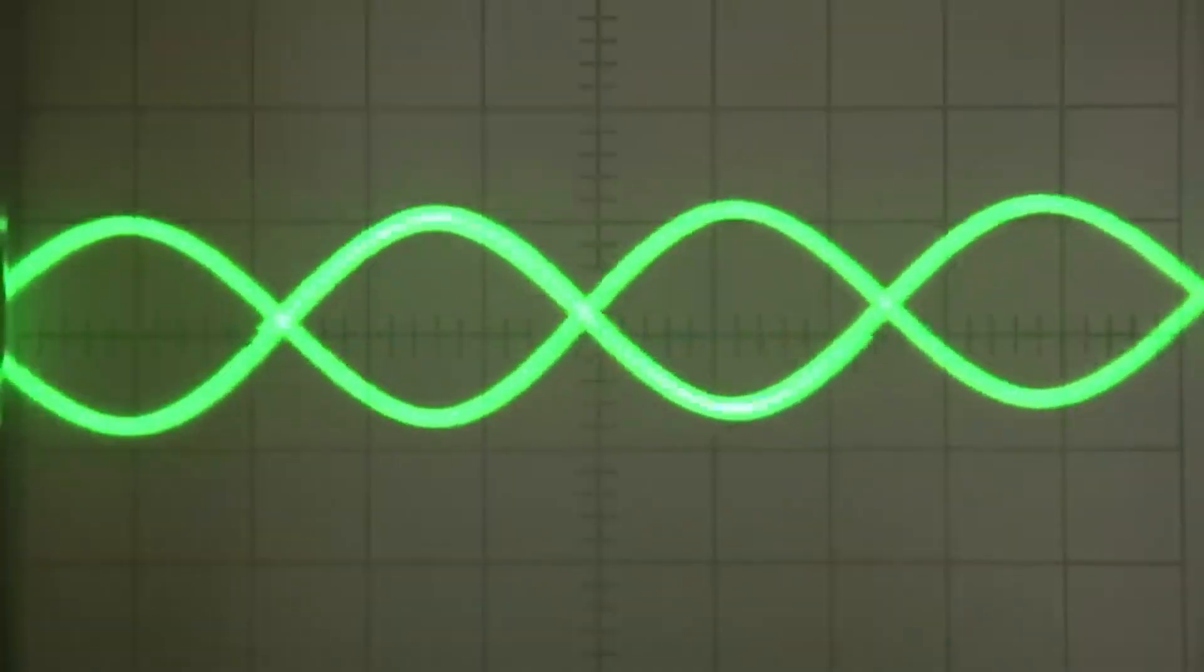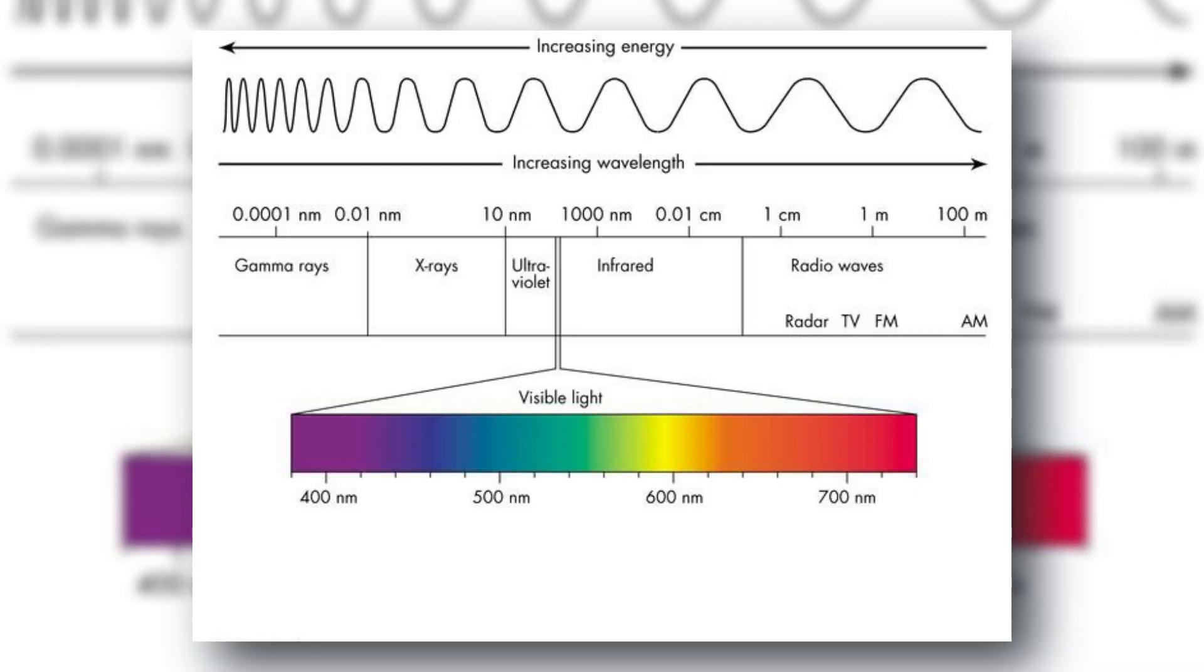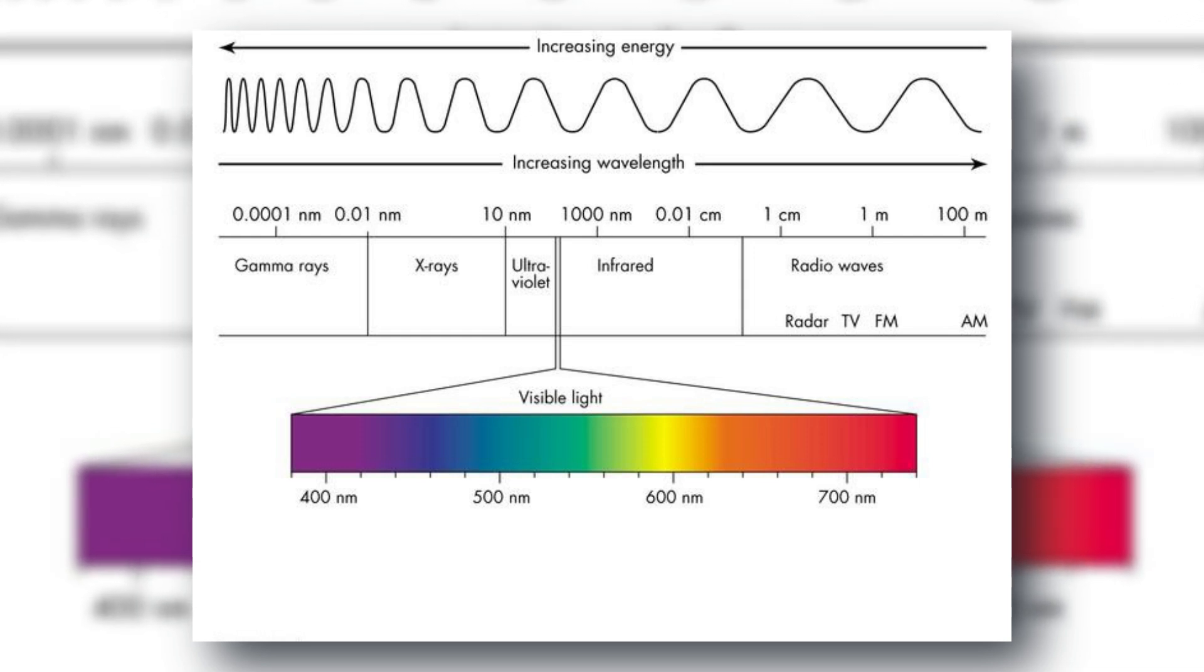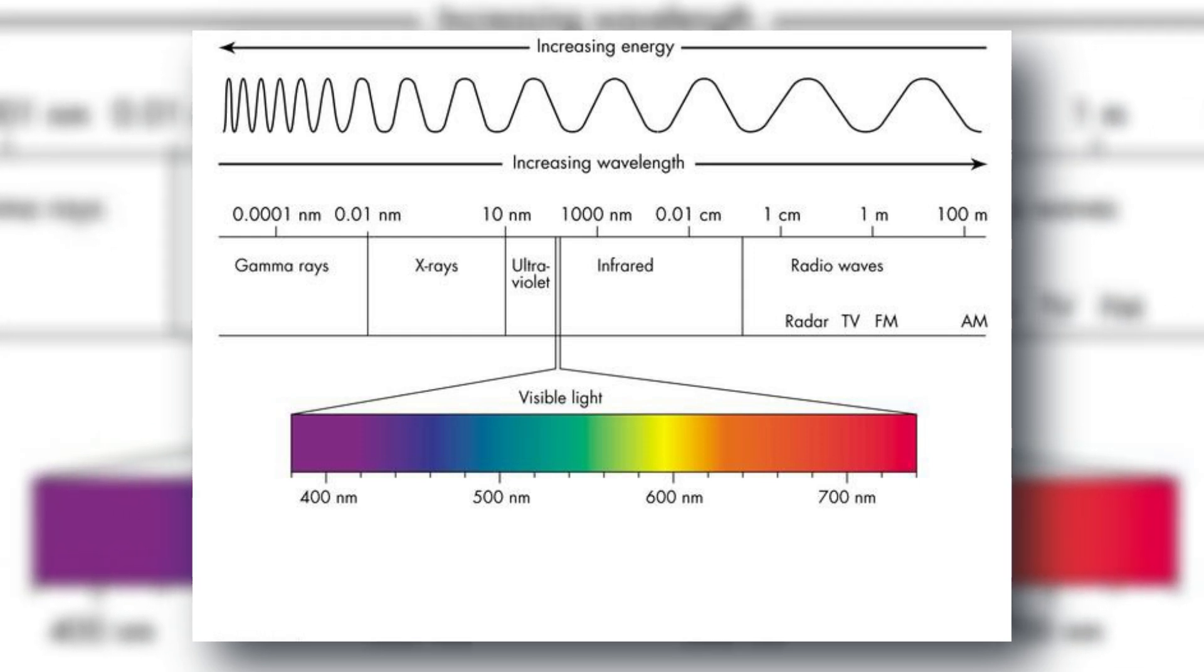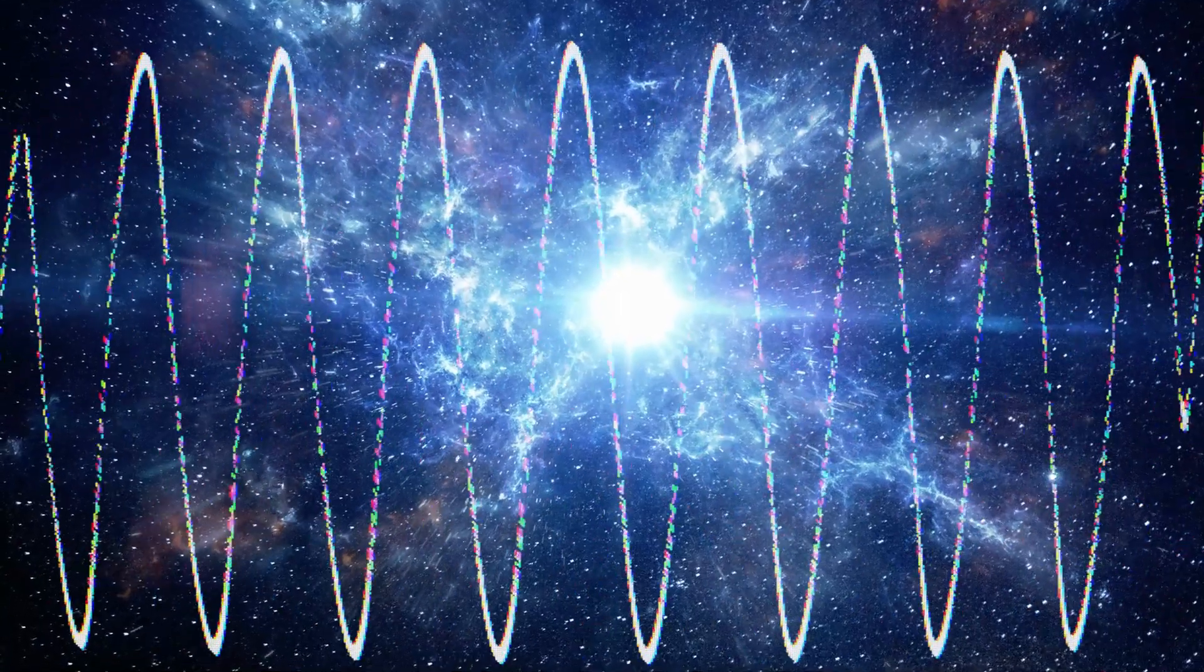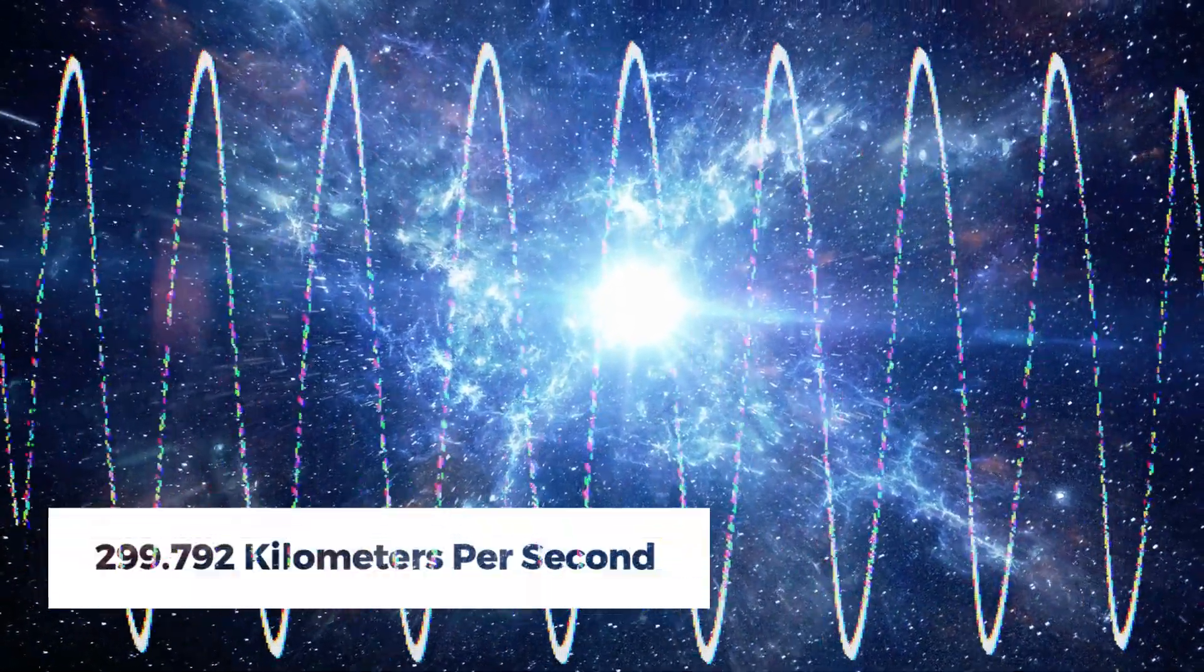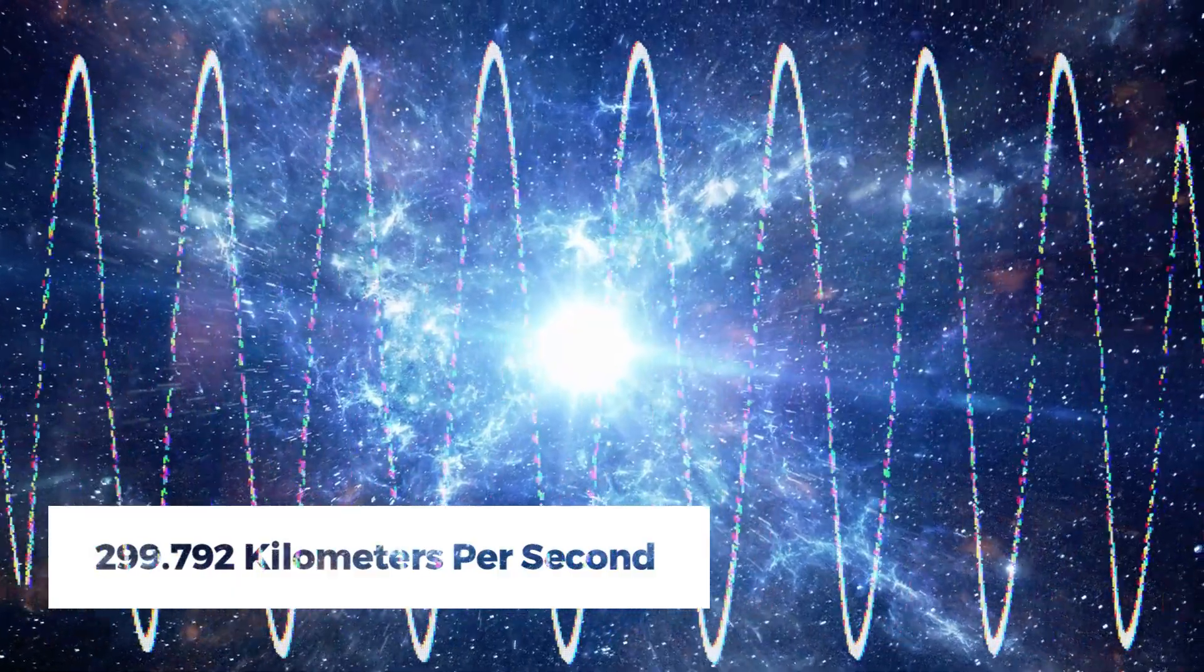Before continuing with discussions about extraterrestrial signals, it's crucial to have a basic understanding of radio waves. These waves are a component of the electromagnetic spectrum, just like light waves, and they all travel at the incredible speed of light at 299,792 kilometers per second.